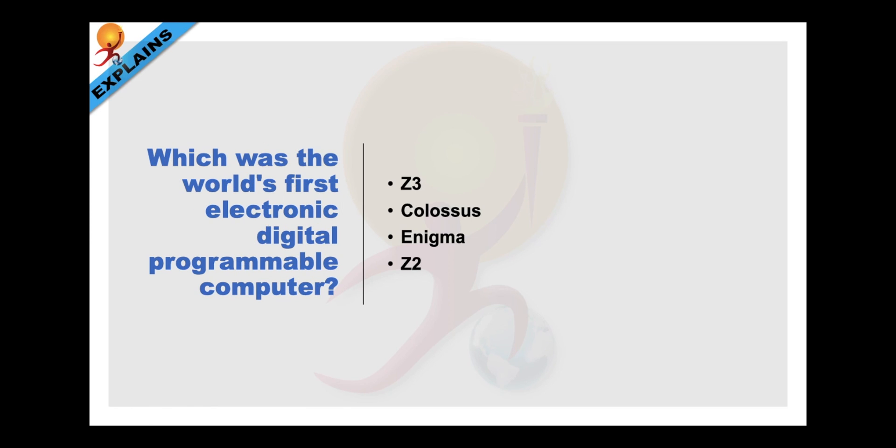Which was the world's first electronic digital programmable computer? Colossus was the world's first electronic digital programmable computer which used a large number of valves.